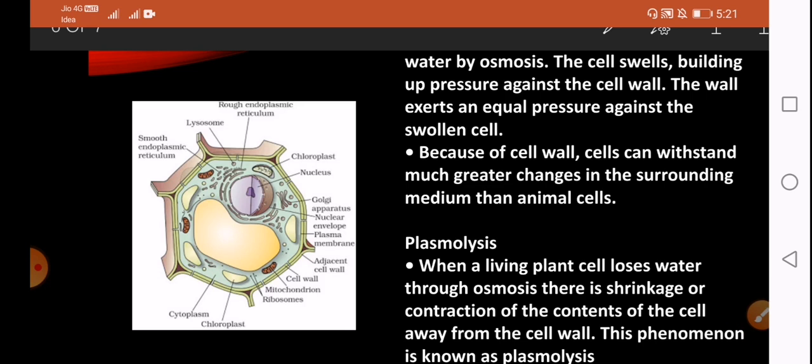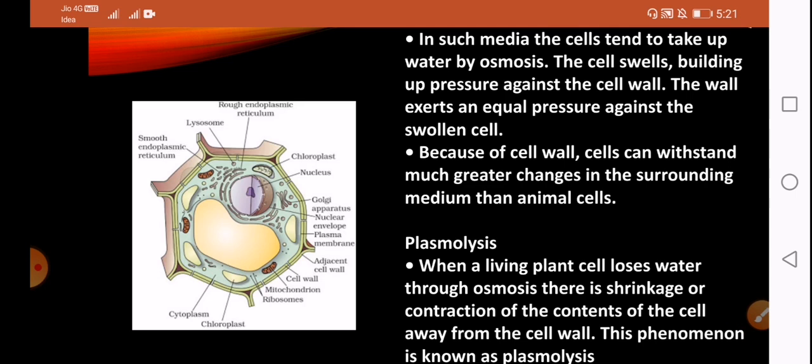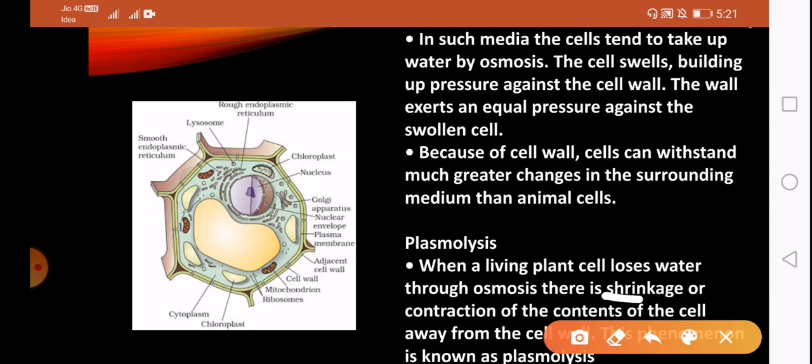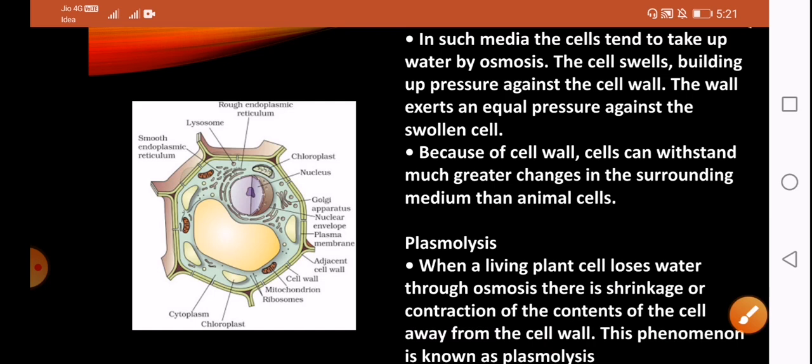Here we have to explain exosmosis: when the plant loses water, it will shrink or contract. This process of water loss through exosmosis is called plasmolysis. That means the cell contents will shrink away from the cell wall. This phenomenon is known as plasmolysis.